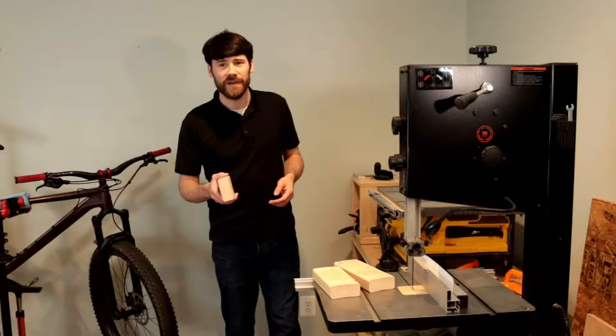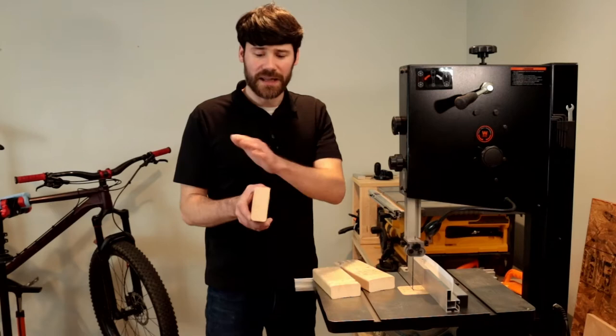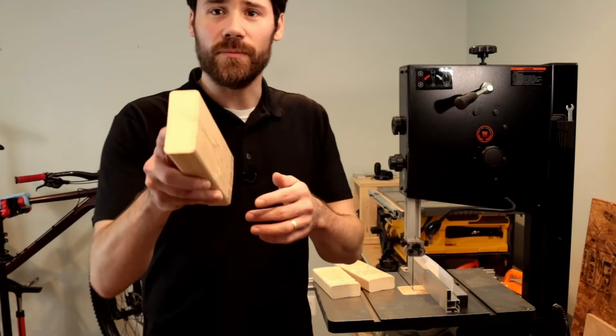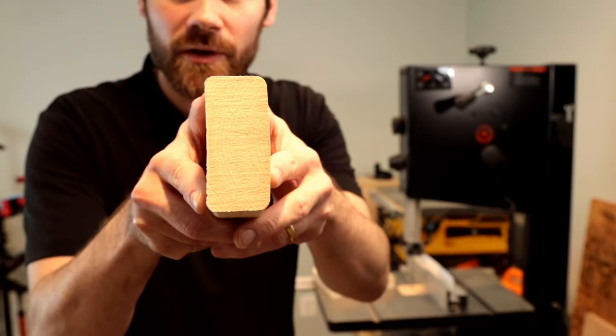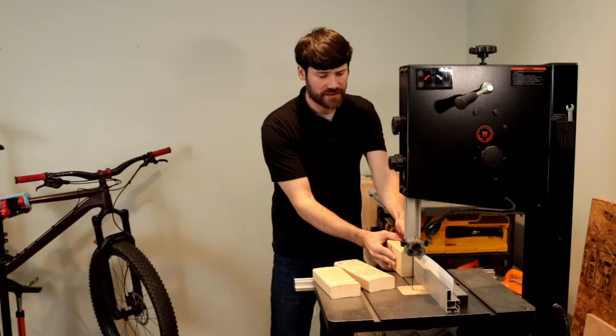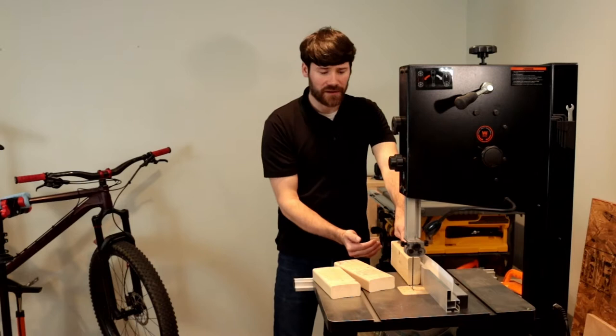We now have some shorter 2x4 blocks that we're going to use for our project. The next step is to flatten both sides so we can glue them up and get a good bond. We can see that these 2x4 blocks are cupped pretty good. We've got a convex and a concave side here. What we're going to do is support the convex side up against the fence on our bandsaw and then remove a layer of material on the concave side.